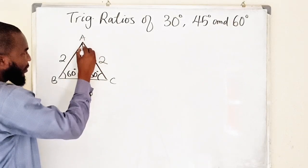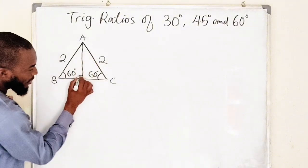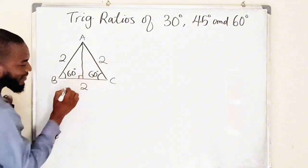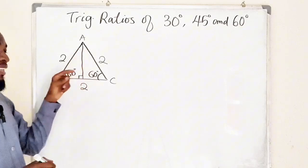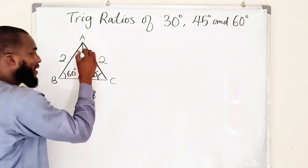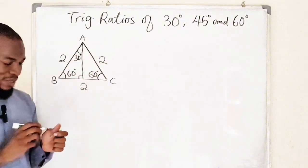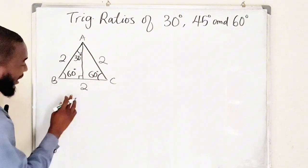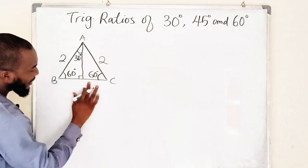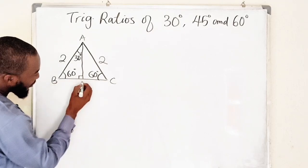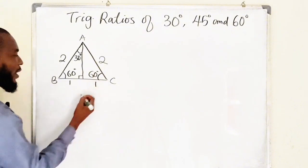We have a perpendicular line like this. That angle is 90 degrees. Remember that the two base angles must be identical and equal, so each will be 30 degrees. So now we have 30 degrees each. And since I have divided this base line into two, from B down to this midpoint will be one, and from this midpoint down to C will be one as well.